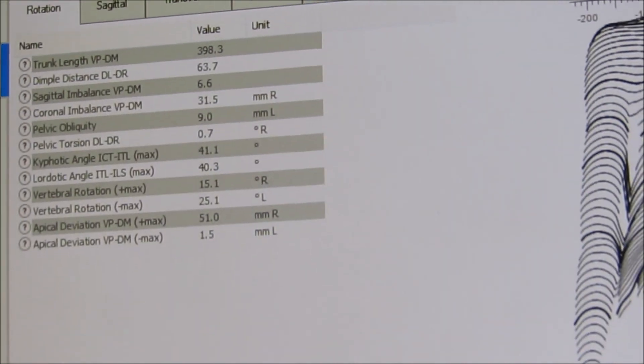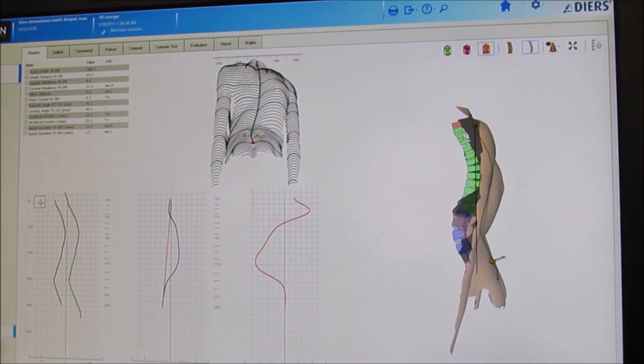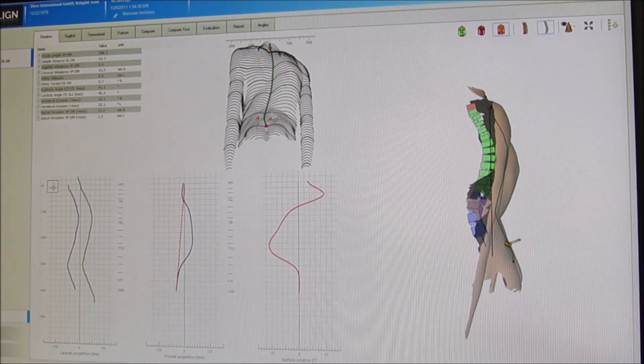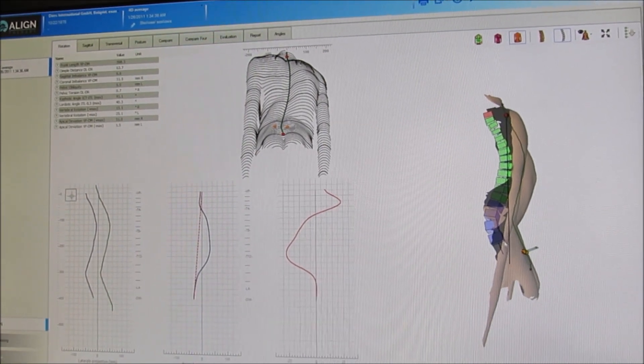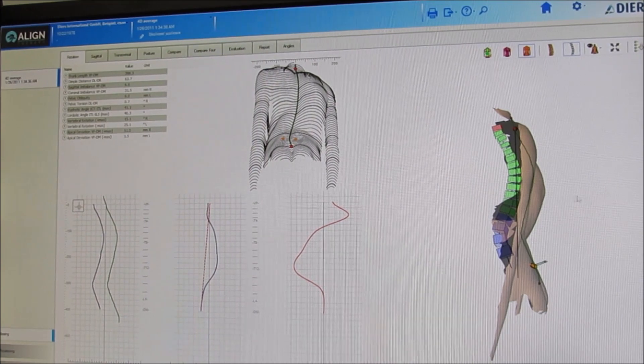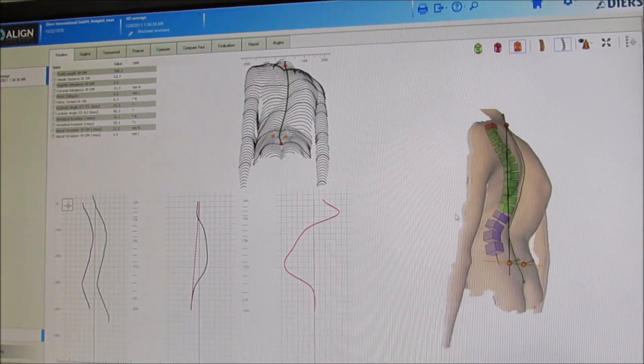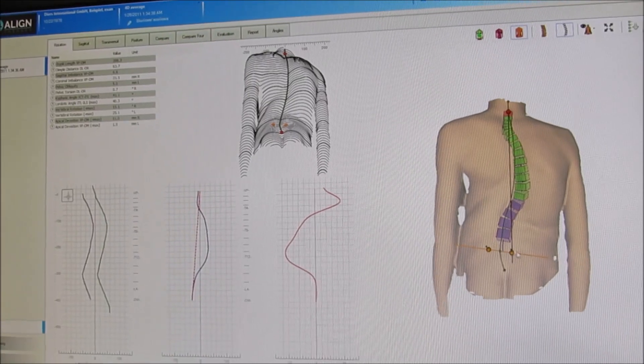We can take the picture and we can actually rotate it in three dimensions so we can see how their posture is with the upper back kyphosis and the low back lordosis. So we get numbers for all those things and we can compare that now to the future to see how things are changing.